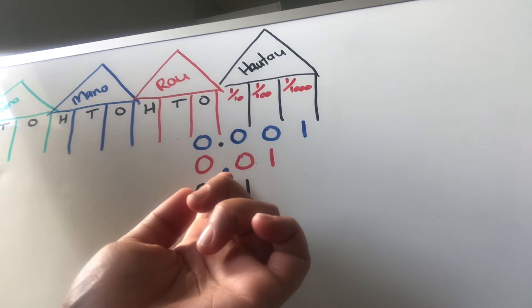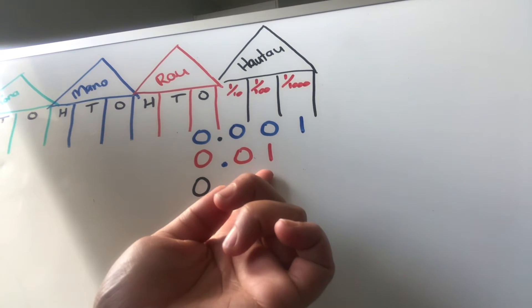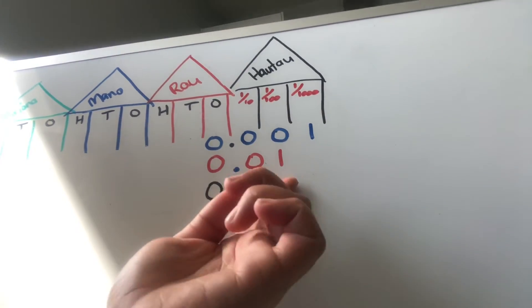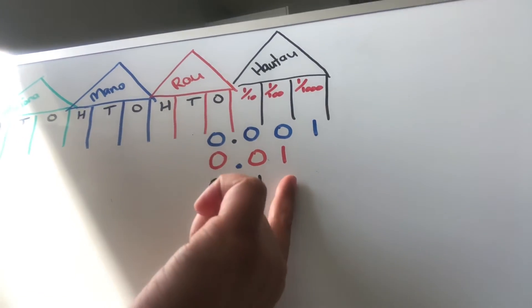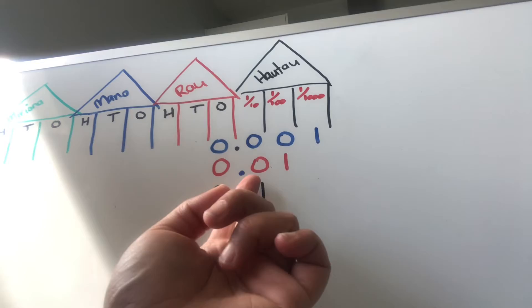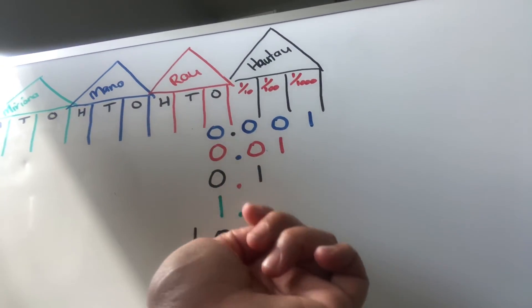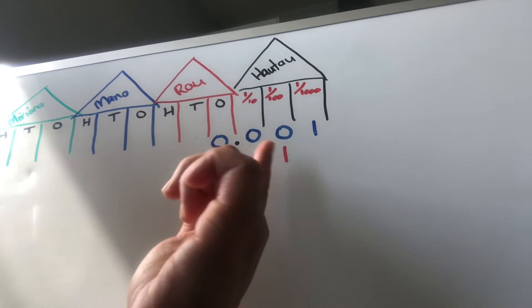Okay, so when we have 0.01, that is like equivalent to one out of a hundred. Now if we added 0.99 to 0.01, we would have like a hundred cents in order to make a dollar.